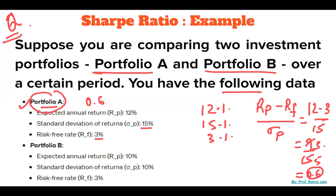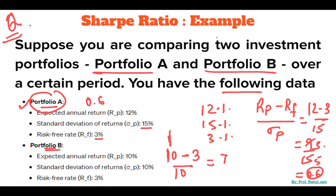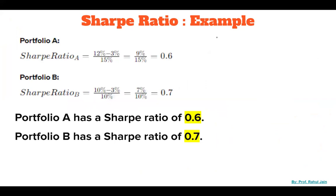For Portfolio B, the expected annual return is 10%, risk-free return is 3%, and standard deviation is 10%. So the Sharpe Ratio is (10 - 3) / 10 = 7/10 = 0.7. Portfolio B's Sharpe Ratio is 0.7, which is bigger than Portfolio A's Sharpe Ratio of 0.6.